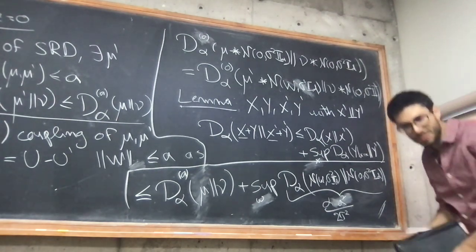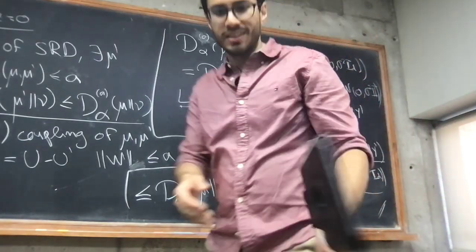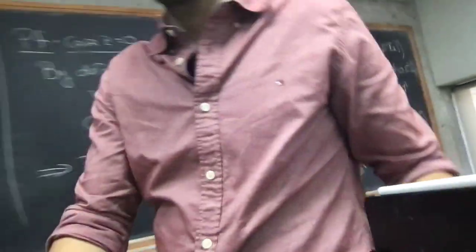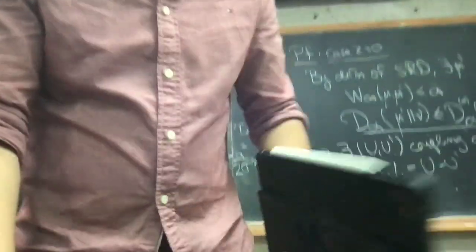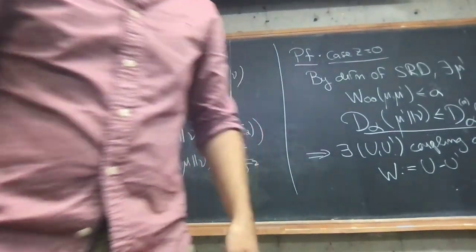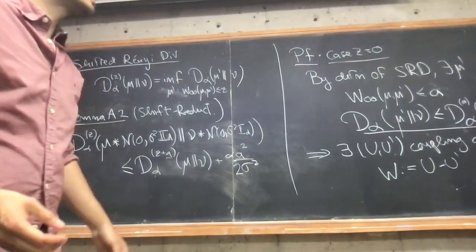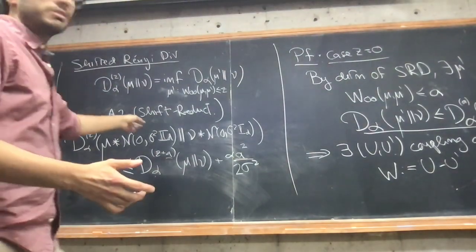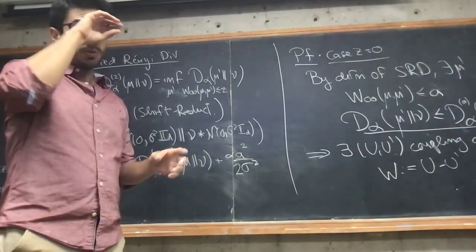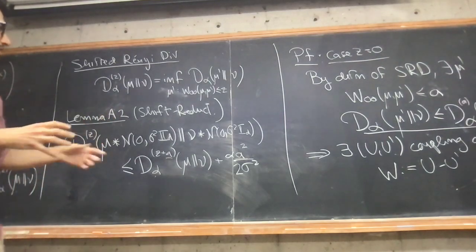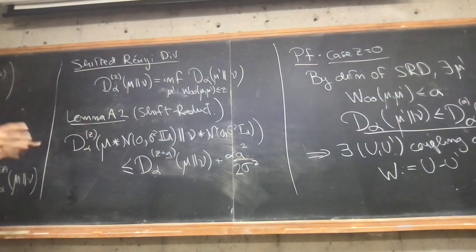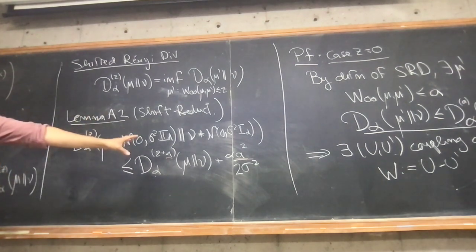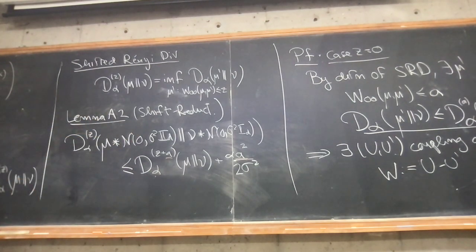Then Paolo is going to start with the next result. What they do in the paper is use these two lemmas — the contraction reduction and the shift reduction — in a composed fashion. Langevin Monte Carlo is a composition of two operations: first a gradient descent step, then a convolution with a Gaussian.